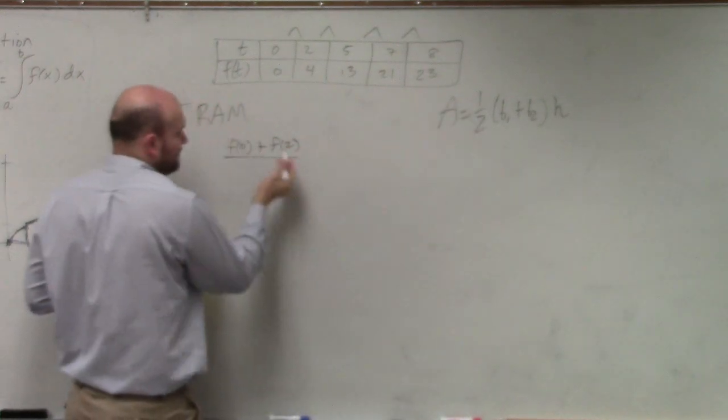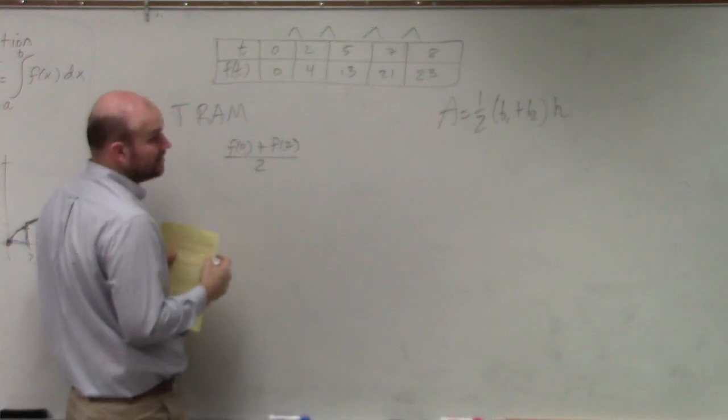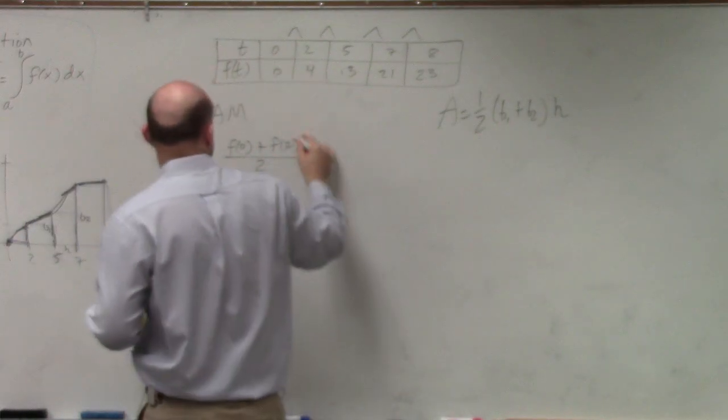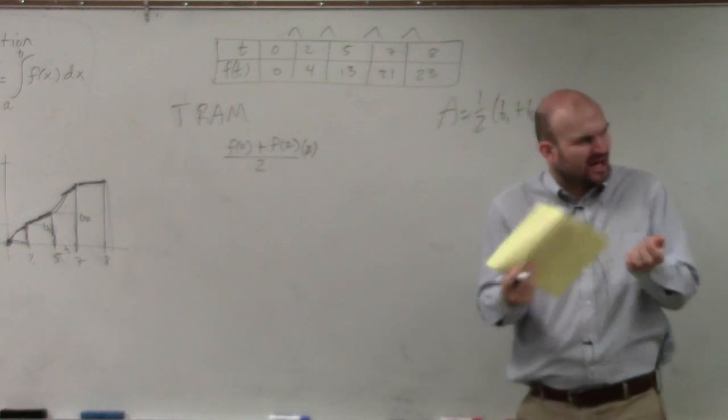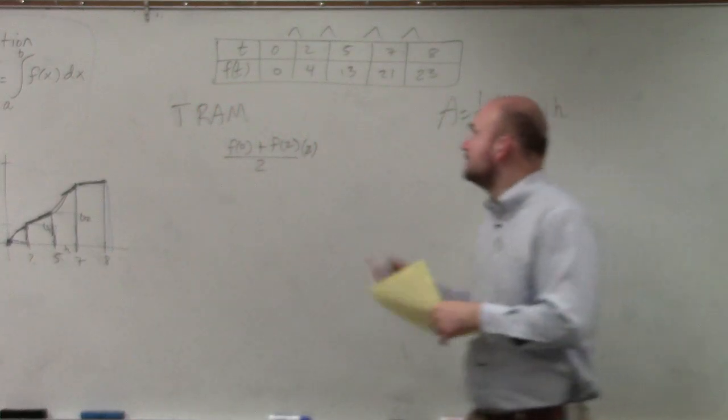It's multiplied by 1 half, which is really just dividing by 2. And then we're multiplying it by its height, which is dx, which is 2, which is that width. The height of the trapezoid is the width, which is 2.